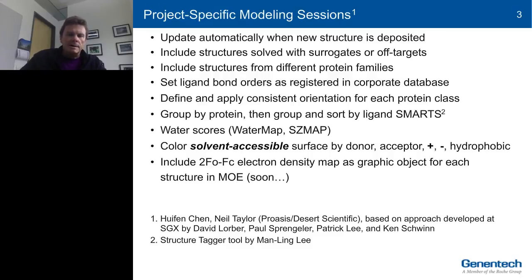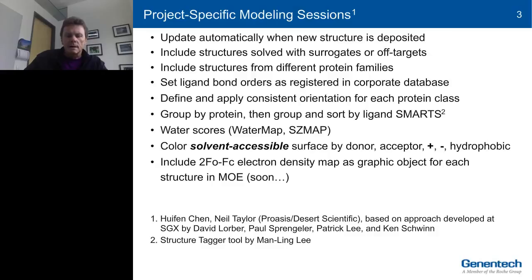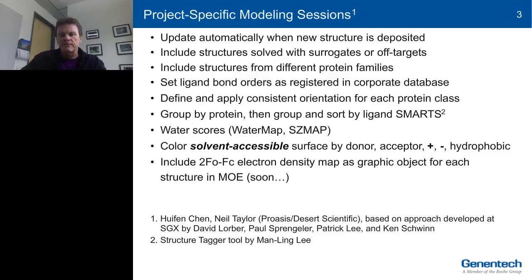That might mean that the tautomer is not quite right, because tautomers could change on binding — those get updated manually based on visual inspection. For each protein class, for example a kinase, we choose a reference structure and then orient all of the other members to that so they are consistently aligned. We've grouped them to make it easy to find particular crystal structures by substitution pattern, by ligand family, by conformational class of the protein, and so on.